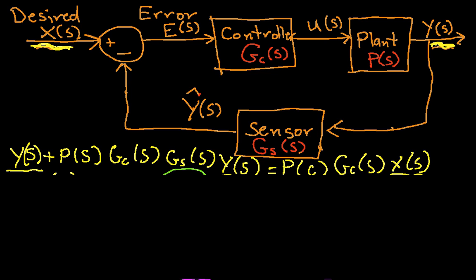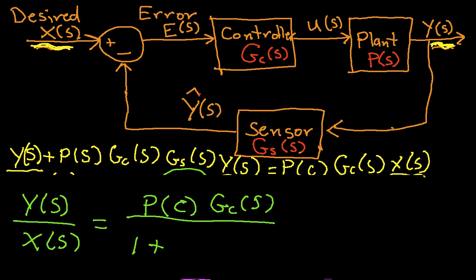We're going to, I'm going to skip a couple of steps, but we have Y of s over X of s, which, again, is the transfer function of this overall system. That's P(s) Gc(s) over 1 plus, whoops, that should be P(s). I have no idea what happened there. 1 plus P of s Gc of s Gs of s. And there you have it. We have the overall transfer function in terms of the transfer functions of the different blocks that we've been looking at.